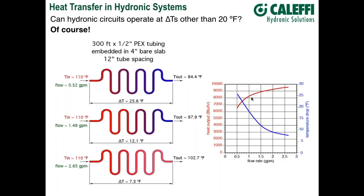The temperature drop of that circuit plotted as a function of flow rate shows a delta T ranging from a little over 25°F down to roughly seven. The rate of heat transfer continues to increase as we increase flow rate, but with a diminishing rate of increase — just like our previous examples. In a hydronic system, higher flow rates produce higher heat outputs in a radiant floor circuit, but the penalty is a significant increase in pumping power.